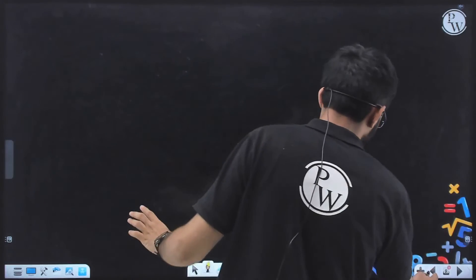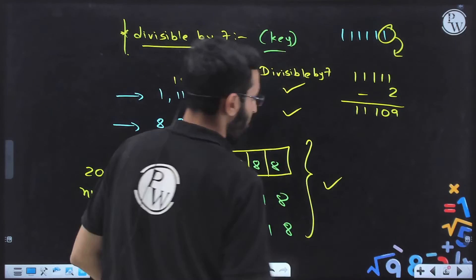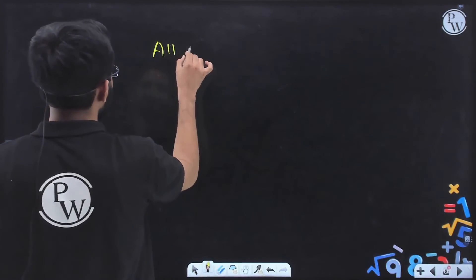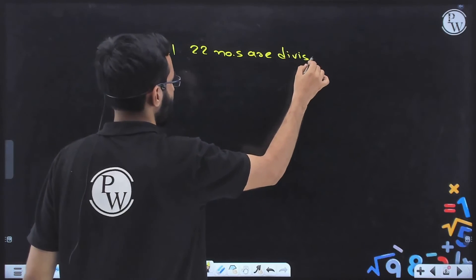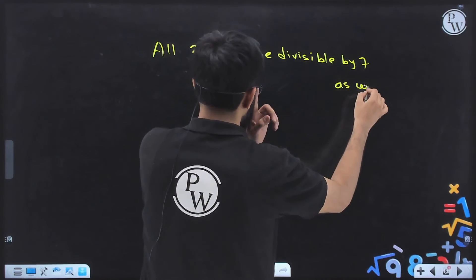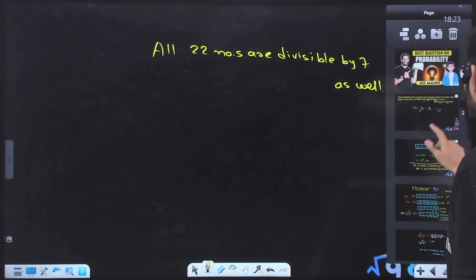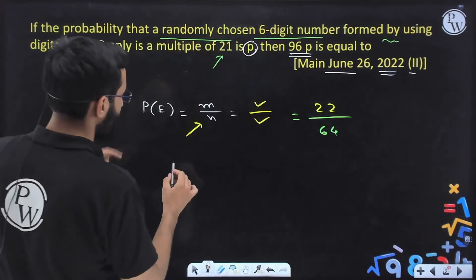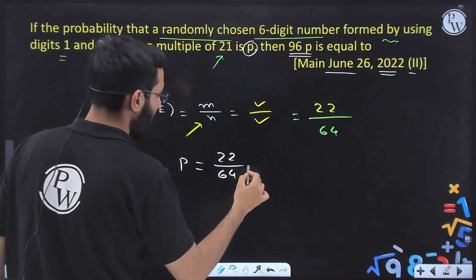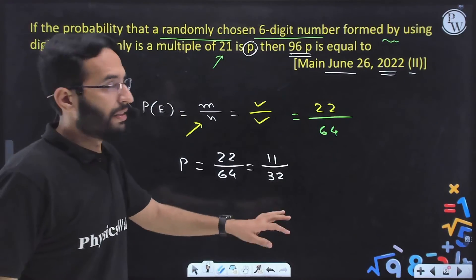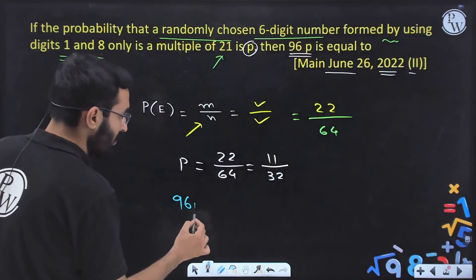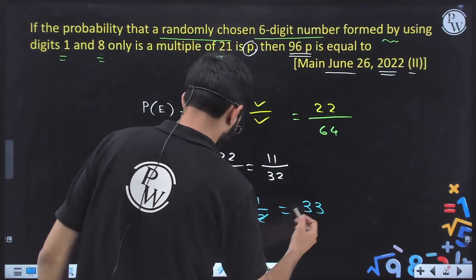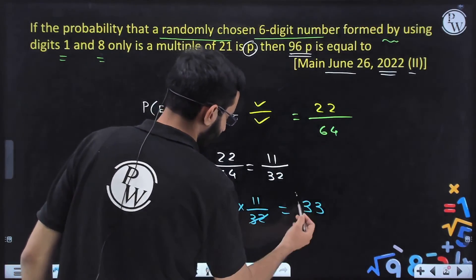So the conclusion: all 22 numbers divisible by 3 are also divisible by 7, therefore all 22 numbers are divisible by 21. These are our favorable outcomes, m = 22. The probability p = 22/64 = 11/32. We need the value of 96p: 96 × (11/32) = 3 × 11 = 33. The final answer is 96p = 33.